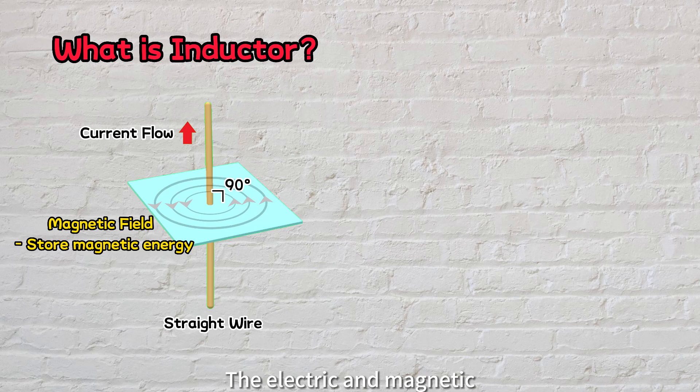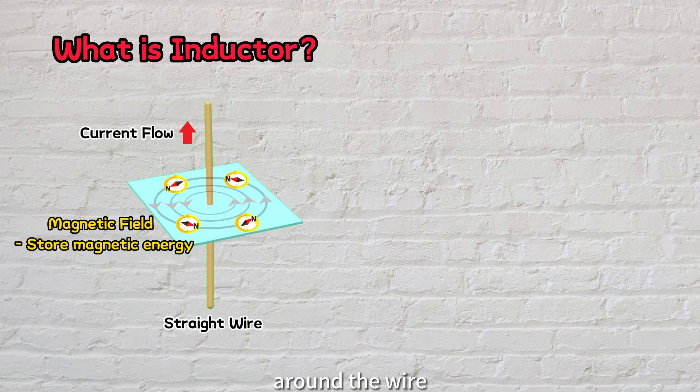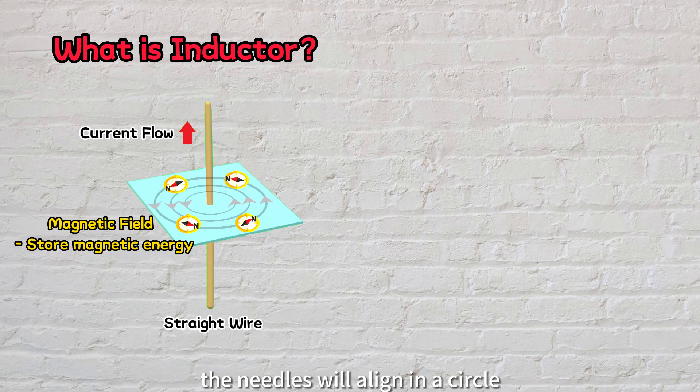The electric and magnetic fields are perpendicular to each other. This phenomenon can be visualized if we place compasses around the wire. When electric current flows through this wire, the needles will align in a circle due to the presence of magnetic field.